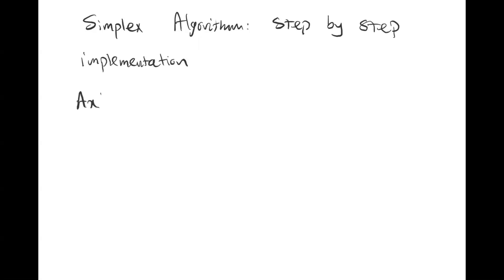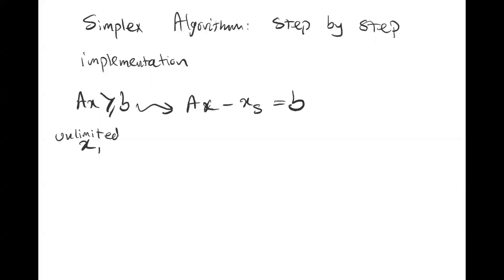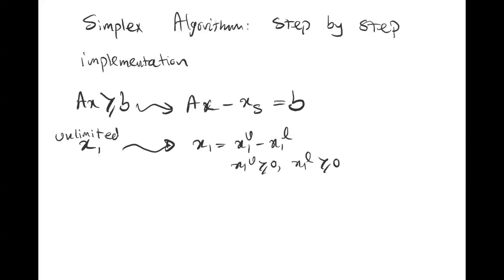So in this lecture we talked about how to create the tableau, how to create the standard format, and the step-by-step implementation of the simplex algorithm. This implementation can help you program linear optimization problems in a consistent way by simply following these steps. We also discussed special cases: for Ax ≥ b, we subtract a slack variable; and for unlimited variables, we replace them with two positive variables.